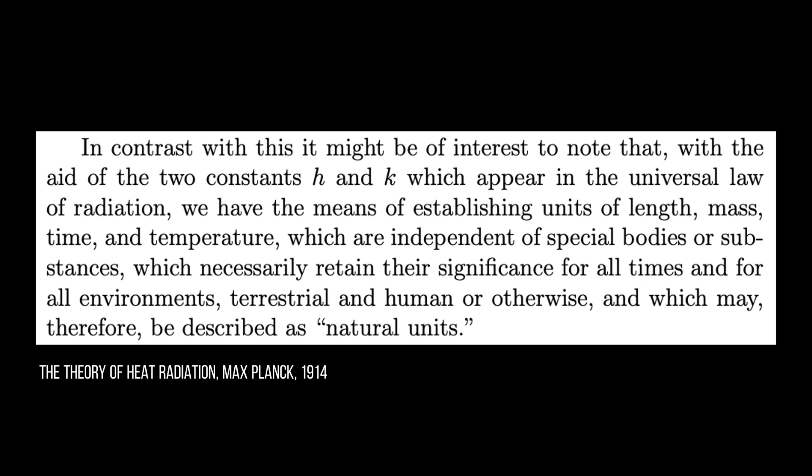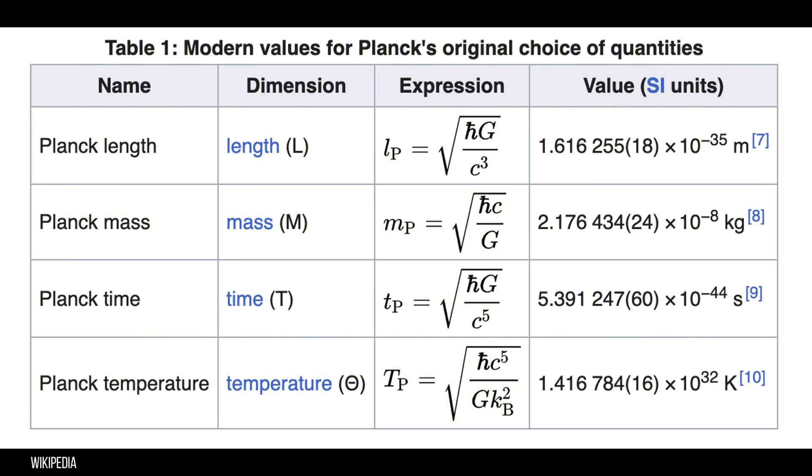Why did he do this? He wanted to set up units that would be independent of special bodies or substances, so that they would keep their meaning for all times and for all civilizations, including extraterrestrial and non-human ones — he called them natural units of measure. More simply put, if the units don't depend on a specific piece of matter, then they are truly universal. The units will be the same for all intelligent life, now and in the future, in all of space. The main ones are a unit of Planck time, a unit of Planck distance, and a unit of Planck mass.